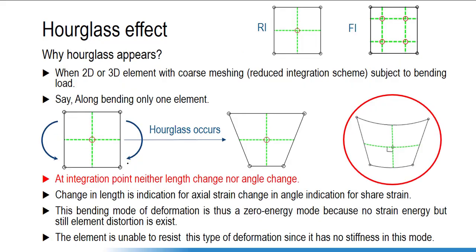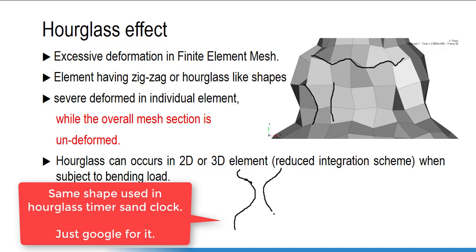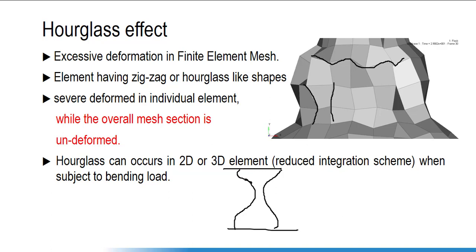In hourglass we get a zigzag shape — you can see here the zigzag shape of the elements. The hourglass shape is like the shape of an hourglass glass: a glass having a narrow middle, wide top and bottom. The similar shape we are getting in the elements here. This is a 3D model and some elements take the hourglass shape along the Z direction, so that phenomenon is known as the hourglass phenomenon.